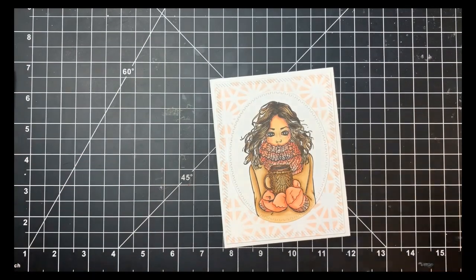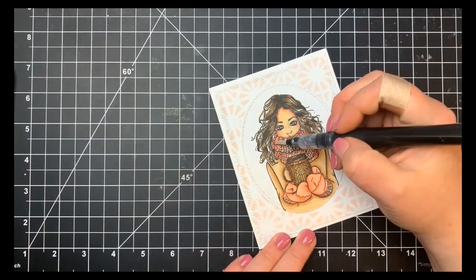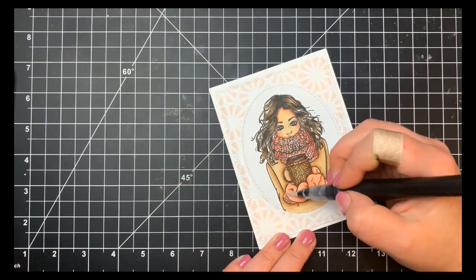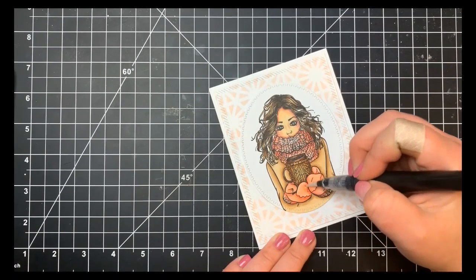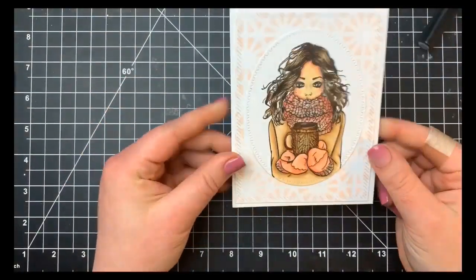Finally, I added a little bit of sparkle using a Spectrum Noir sparkle pen—this is the clear one. I'm just going to add a little bit of sparkle to her mittens and her scarf. And that is it. That's the card for today, guys. Thanks a lot for stopping by. Have a great day, and congratulations to Tricia. Bye.